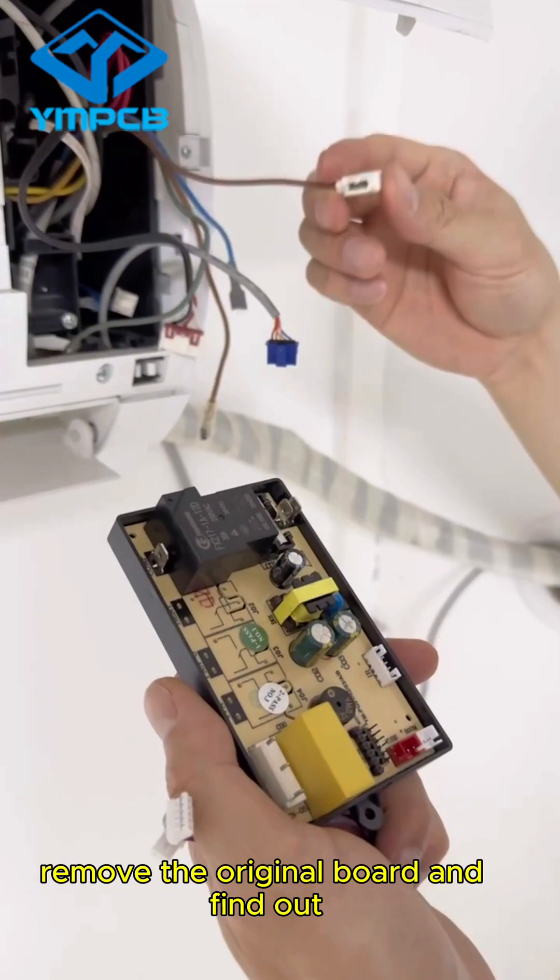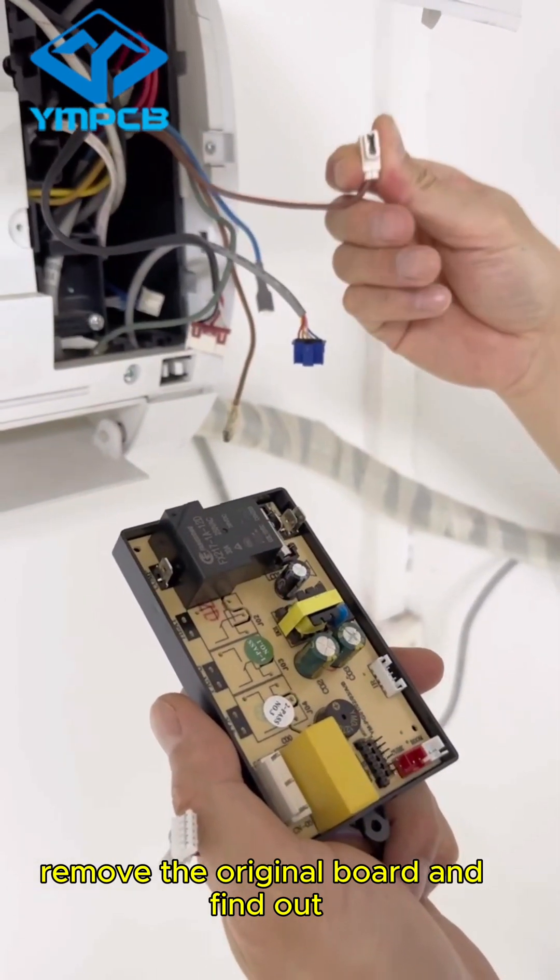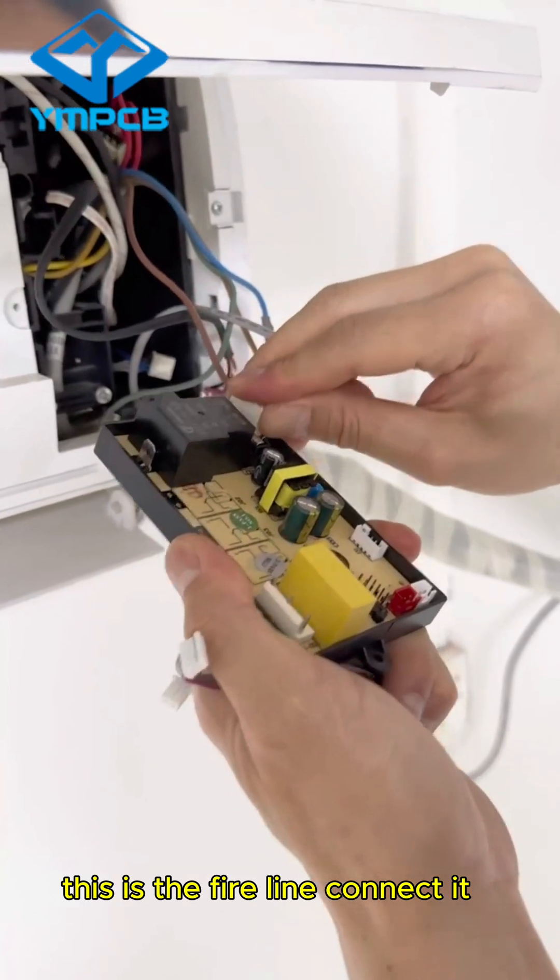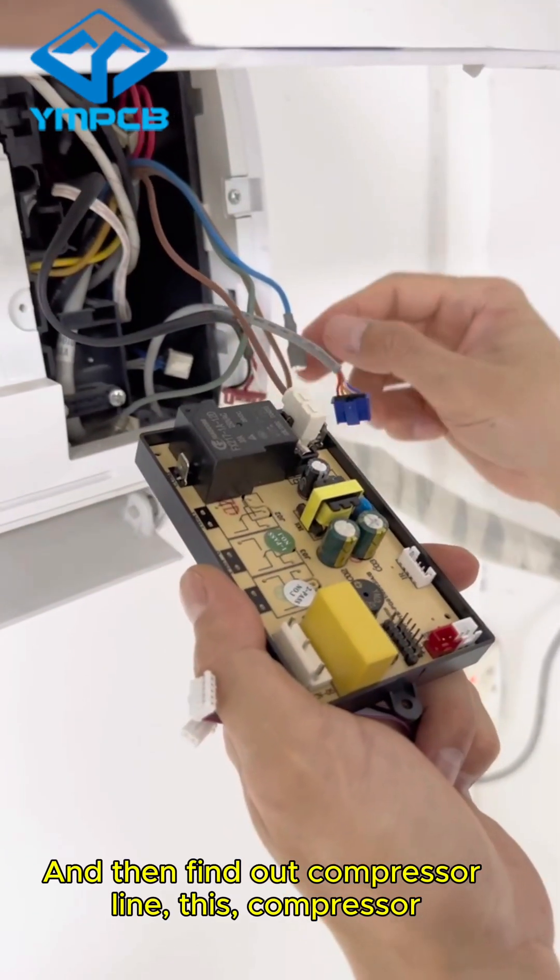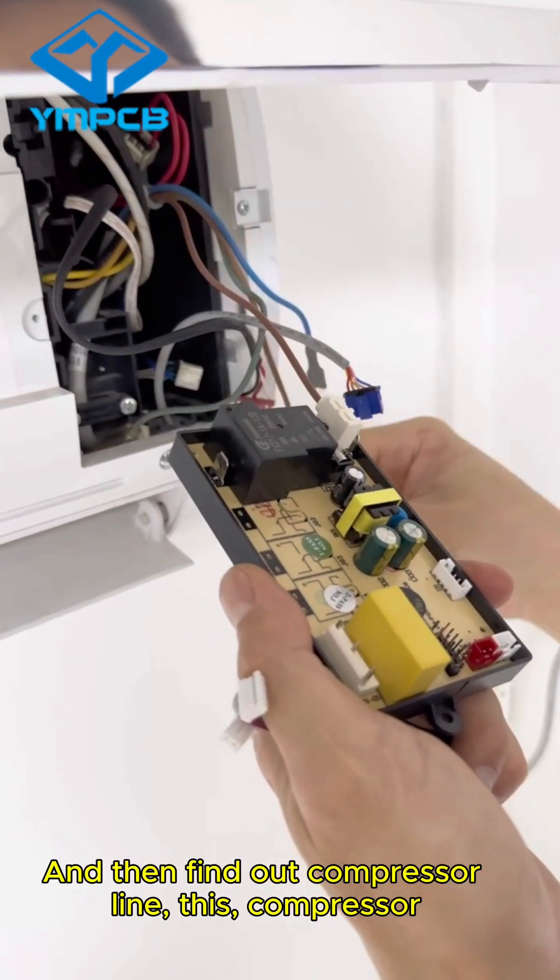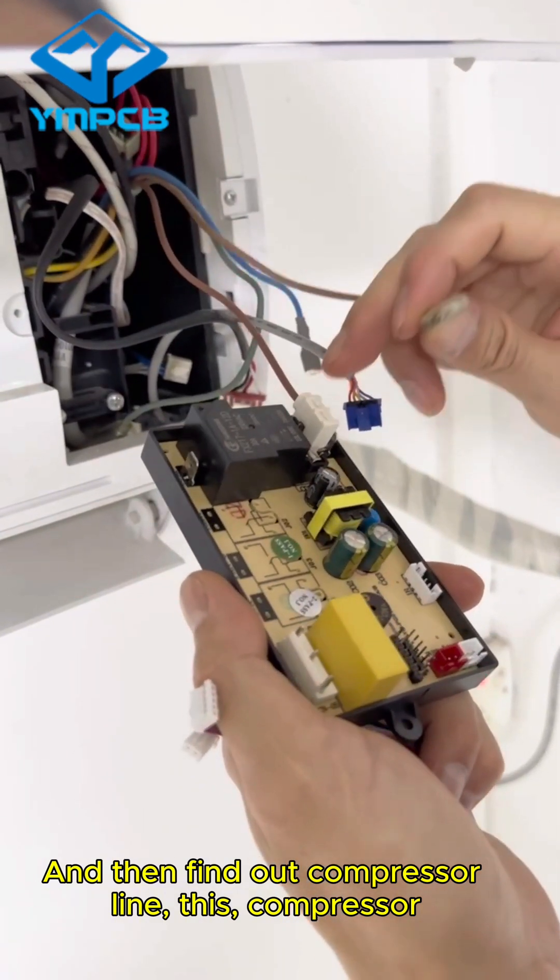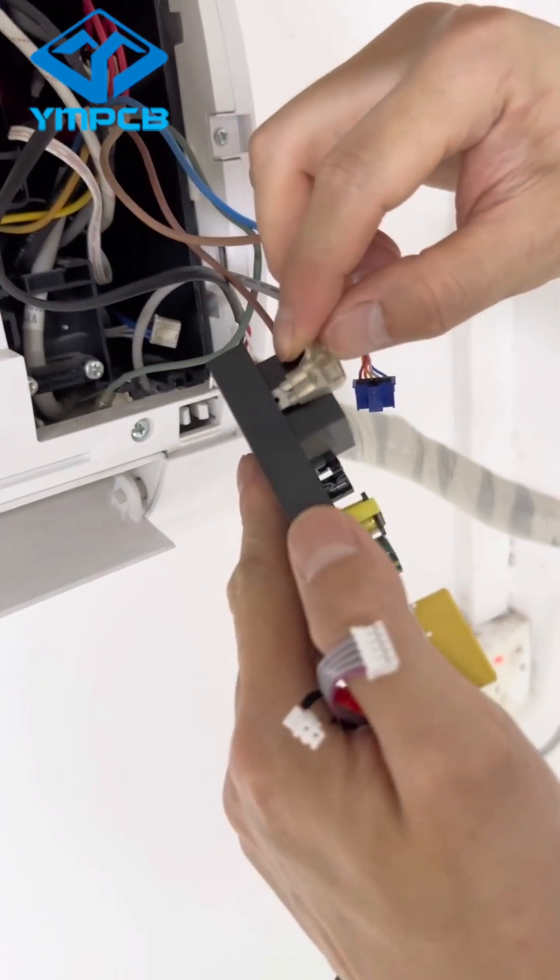Remove the original board and find out this is the file line. Connect it. And then find out compressor line. This compressor. Connect it.